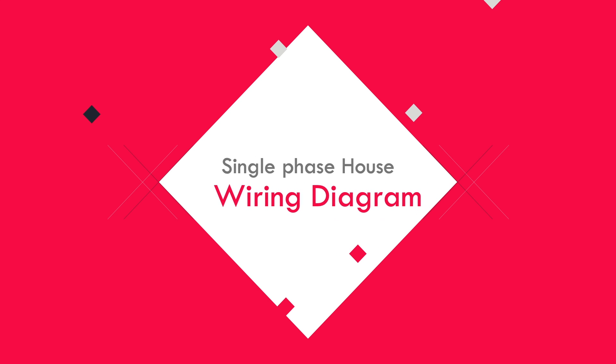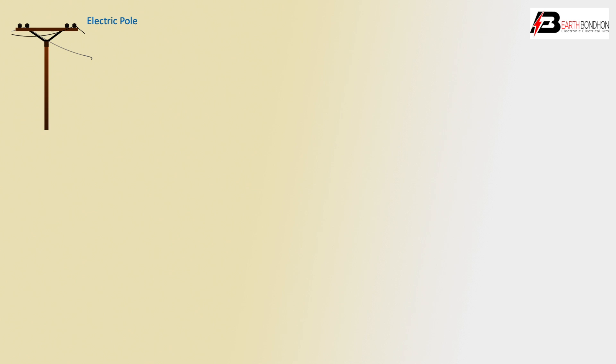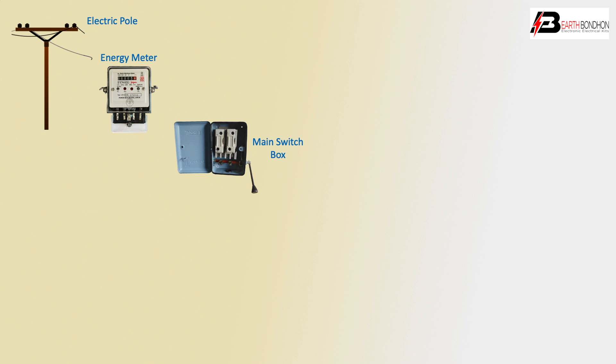Hello viewers, today I discuss the single phase house wiring diagram. Let's get started. First, the electric pole — single-phase electric pole, phase and neutral, then energy meter, single-phase, and main switch box with fuse.